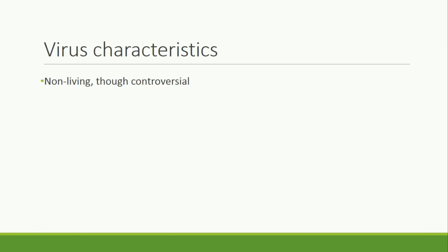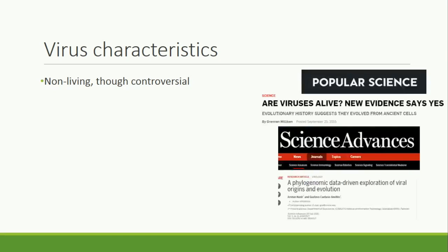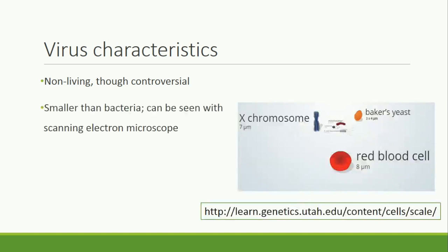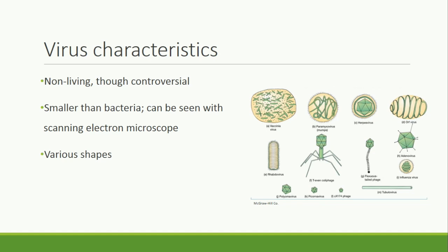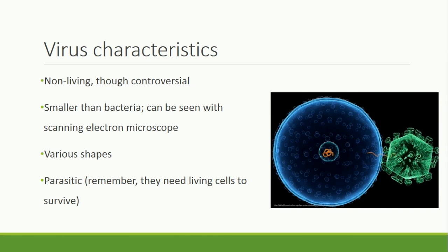Viruses are next. Until recently, viruses were considered non-living, but studies in 2015 asserted that viruses should be considered living. This has been a controversial subject for decades and will likely continue to be contested on both sides of the argument. Viruses are much smaller than bacteria; they can't be seen in a regular microscope, but can be seen in a scanning electron microscope. Go back to the website you viewed for bacteria to see size comparisons of viruses. Viruses come in all sorts of shapes — some are simple, such as the ORV virus and rhabdovirus, or some are complex, such as the T11 colophage. Viruses are parasitic, meaning they rely on living cells to survive. Some viruses can go into a hibernation-like state when not in a living cell, but they can't reproduce outside of a living cell.